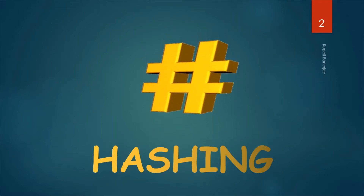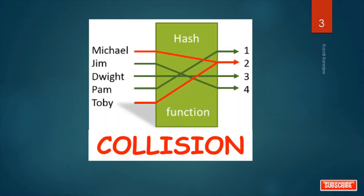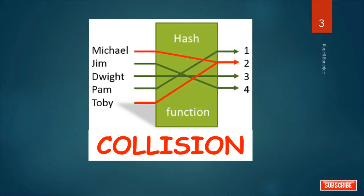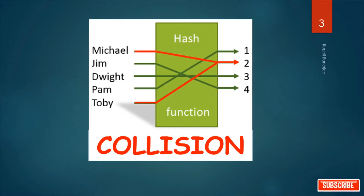Today our topic is collision. Why does collision occur? Collision is a situation when the resultant hashes for two or more data elements in the dataset map to the same location in the hash table. In this situation, two or more data elements would qualify to be stored or mapped to the same location in the hash table.